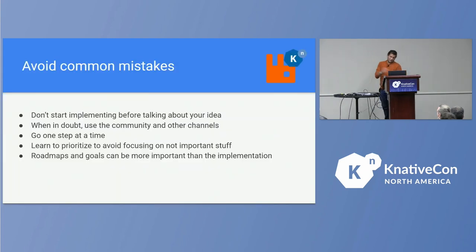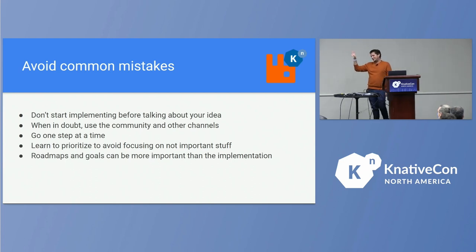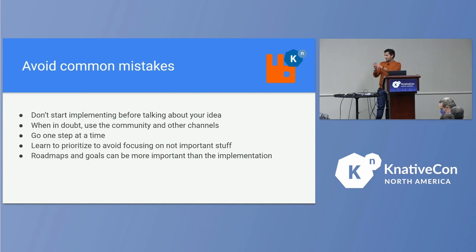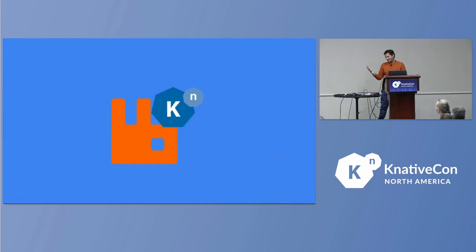Finally, avoid common mistakes. This is a list of things that went wrong in the RabbitMQ integration, but also things we learned a lot from. Don't start implementing before talking about your idea. Focus. When in doubt, use the community and other channels. Go one step at a time — don't bite off more than you can do. When implementing, go right into that path and don't feel you need to learn the whole project. Learn to prioritize: roadmaps and goals can be more important than the implementation itself. Hopefully this talk gets you a little bit excited or changes your mind about integrating something with Knative.